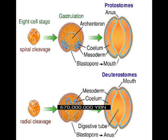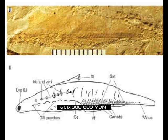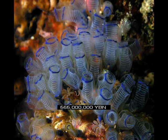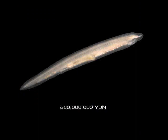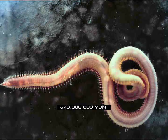Deuterostomes — ancestor of acorn worms, starfish, and all chordates. Chordates — ancestor of all tunicates, fish, amphibians, reptiles, mammals, and birds. Tunicates. First fish.